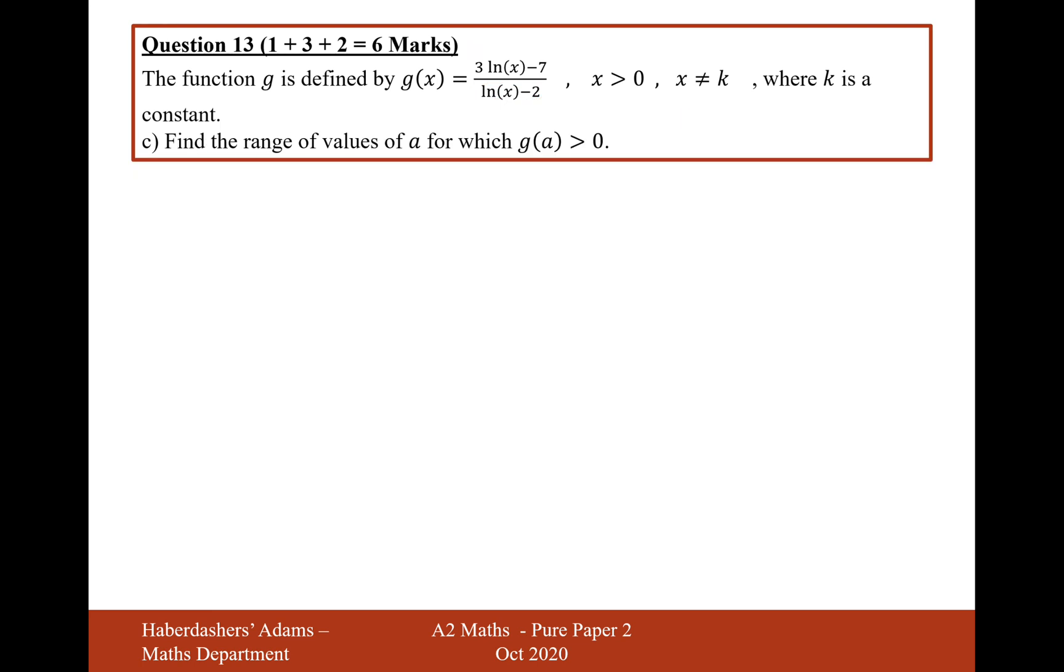So part c is find the range of values of a for which g(a) is greater than 0. So for a fraction to be greater than 0, I need them both to be positive or both to be negative. So what I'll do is, independently, my numerator and my denominator, I'm going to find out when they're equal to 0. For the numerator, it's going to be x equals e to the 7 over 3. And I'm just going to write down the approximate decimal value for that, 10.3. And then for the numerator, ln(x) minus 2 equals 0 is going to be x equals e squared. And I'm just getting in my head what that's going to roughly be as well. So it'd be about 7.38.